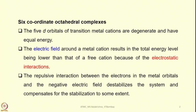When we consider 6-coordinate octahedral complexes, this is how crystal field theory investigation began. If you consider any transmetallic complex, the 5 d orbitals of these cations are degenerate and have equal energy. The electric field around a metal cation results in the total energy level being lower than that of a free cation because of the electrostatic interactions. There will also be some repulsive interactions because ligands carry electrons and metals also have electrons, so the negative electric field destabilizes the system and compensates for the stabilization to some extent.